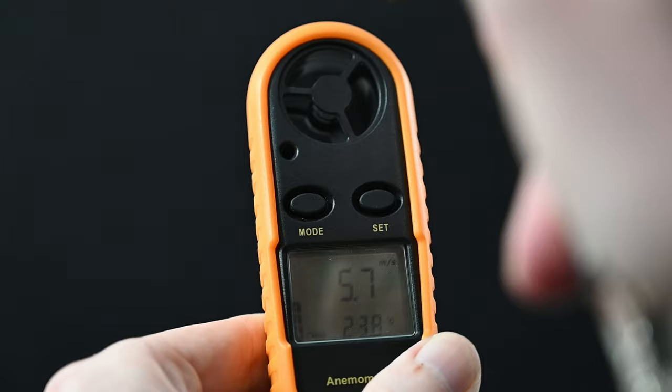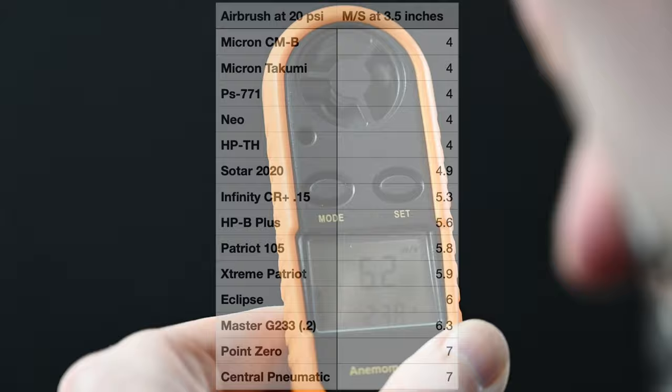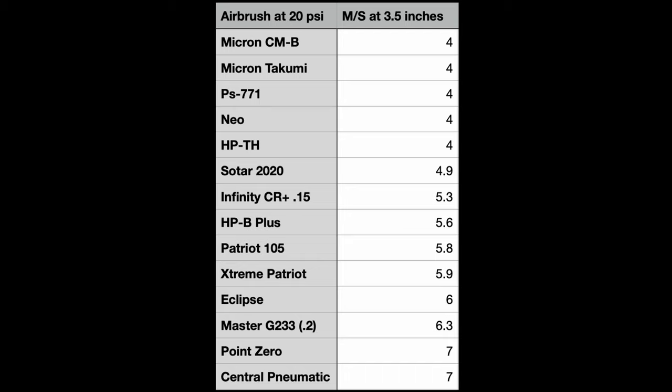Checking the airspeed at 20 PSI at three and a half inches away, I get an airspeed right around 6.3 meters per second. And from my test, this feels very similar to the Iwata Eclipse and the Badger Patriot 105. This is about what I expected from this airbrush because it's clearly designed as a general use airbrush. And from my test, they all spray at around this airspeed.